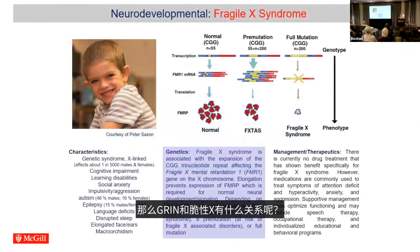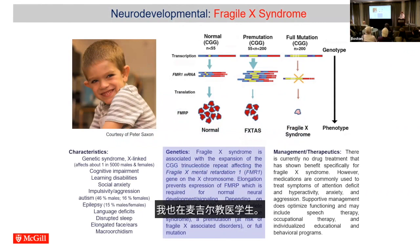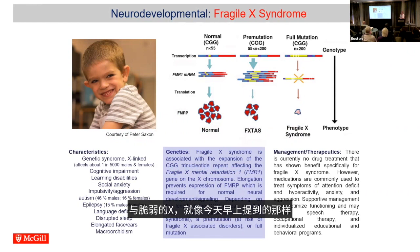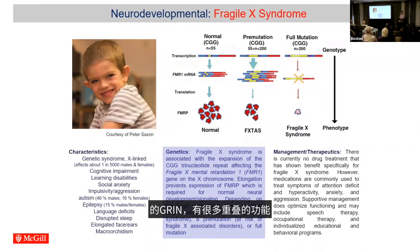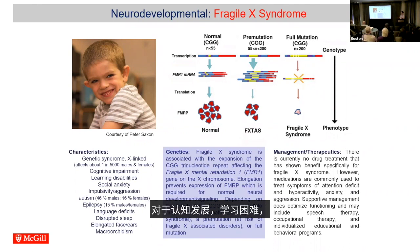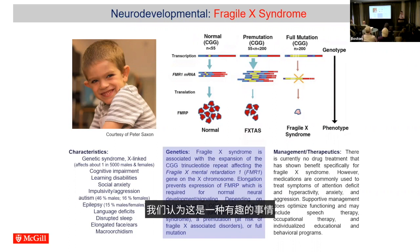So what's GRIN got to do with fragile X? We were interested in fragile X, and I teach medical students at McGill. When you look at the clinical profile of kids with fragile X — just like was mentioned this morning in discussions about clinical features of GRIN — there are a lot of overlapping features with neurodevelopmental disorders. For this audience, I don't need to point out cognitive development, learning difficulties, social anxiety, and aggression.